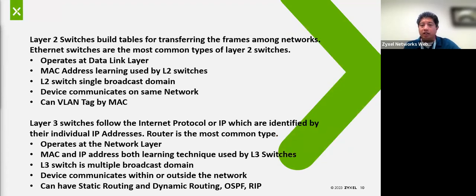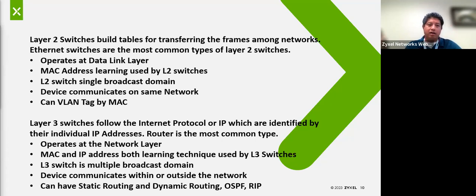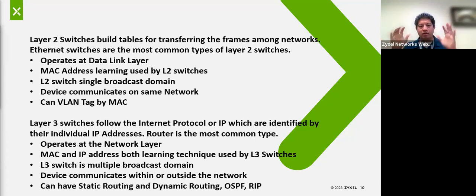Layer 2 switches build tables. They transfer packets and frames among different networks — that's the most common type of switch today. They operate at the data link layer with MAC address learning, and those MAC address tables are within the device itself. Layer 2 switches also typically operate on a single broadcast domain. Of course, VLANs and things like that can separate traffic within the switch, but in general a Layer 2 switch operates within its own domain.